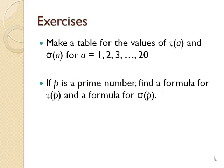I'd like for you to make a table of values for tau and for sigma where A goes from 1 to 20. After you've made that table, I'd like for you to look at where A was a prime number and determine if you have a prime number, what is tau of that prime number? What is sigma of that prime number? Could you come up with a formula for that?